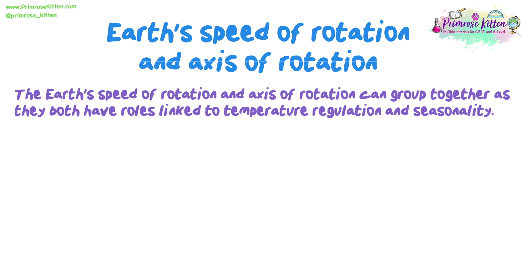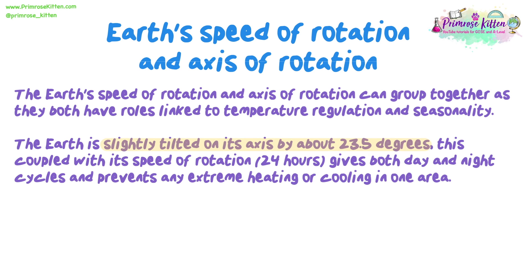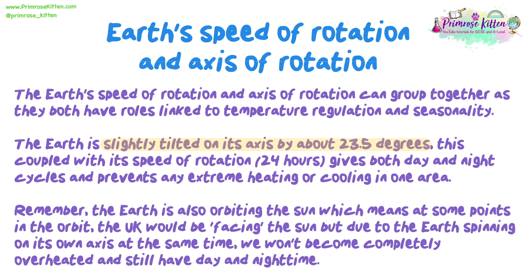The earth's speed of rotation and axis of rotation can be grouped together, as they both have roles linked to temperature regulation and seasonality. The earth is slightly tilted on its axis by about 23.5 degrees. This, coupled with its speed of rotation of 24 hours, gives both day and night cycles and prevents any extreme heating or cooling in one area. The earth is also orbiting the sun, which means at some points in the orbit the UK would be facing the sun, but due to the earth spinning on its own axis at the same time, we won't become completely overheated and still have day and night time.